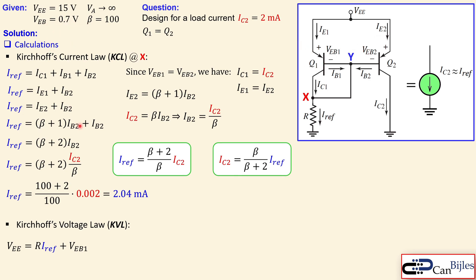That's actually Ohm's law plus the VEB1 or VBE2 doesn't matter. That is 0.7. So we know this, the second term on the right hand side. We know the VEE which is 15. And we also know the reference current we just calculated. So the only unknown is R.